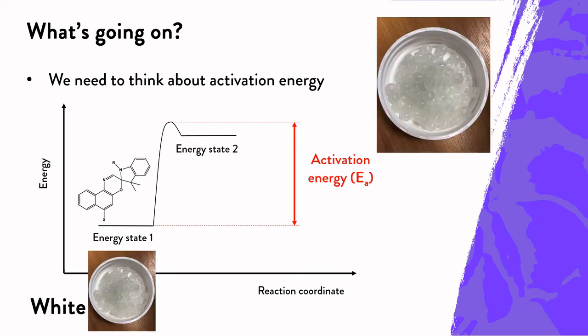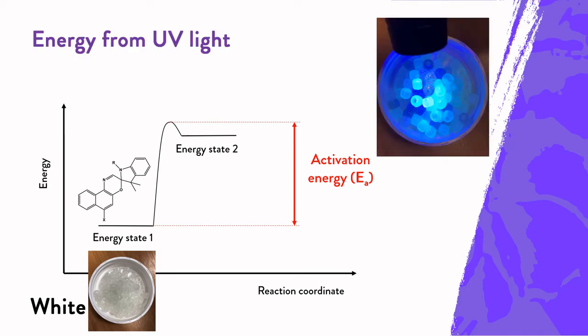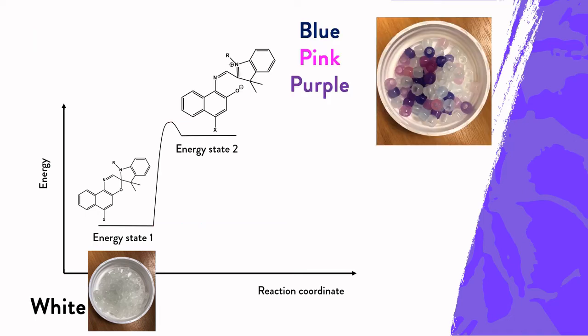These UV colour-changing beads are a white or colourless plastic with a dye molecule in. At energy state one, this dye molecule is colourless. If we shine UV or ultraviolet light onto the UV beads, this changes the structure of the dye molecule slightly, promoting it into energy state two.